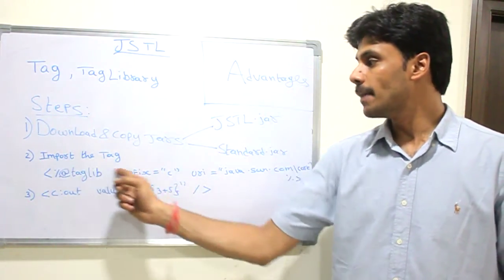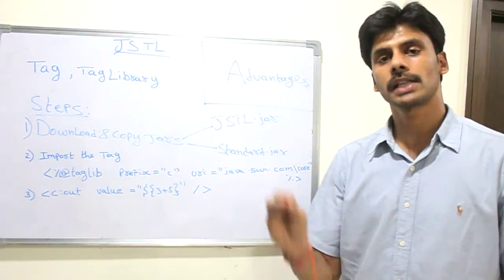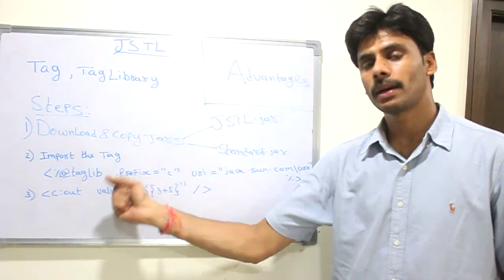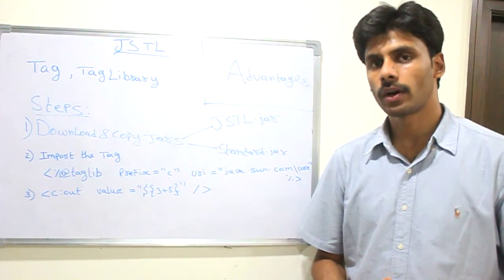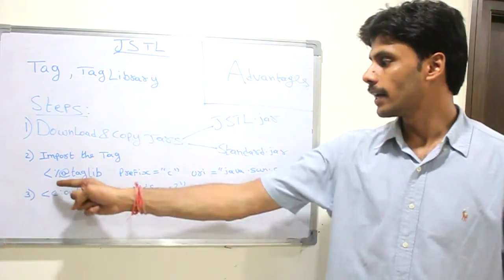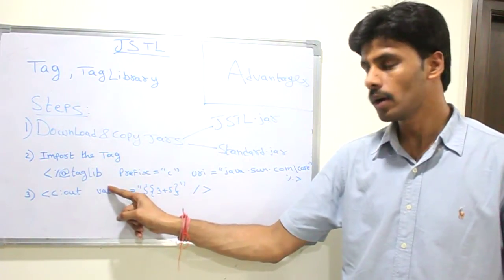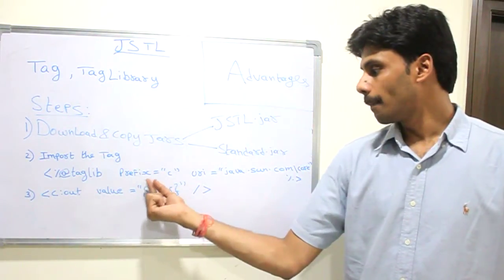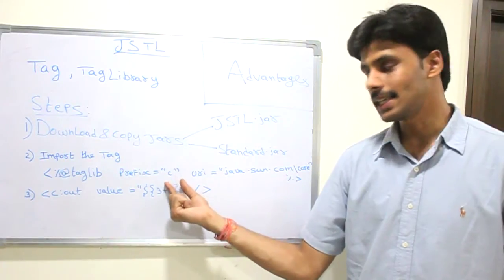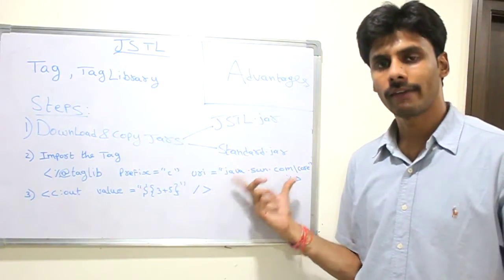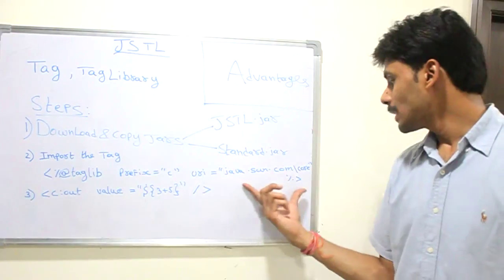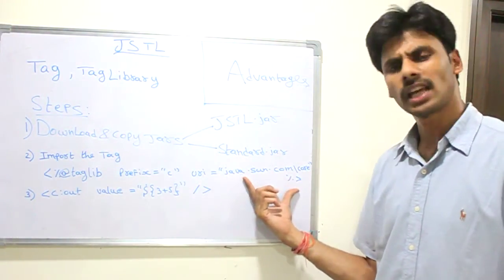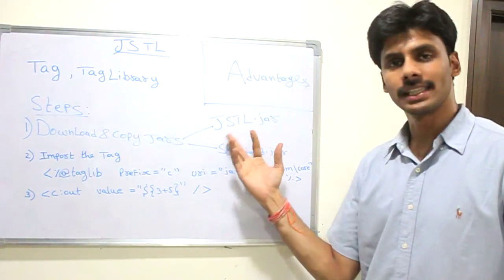The second step is to import the tag library. Once you drop the JARs, the tag libraries are there in those JARs. Now to use them in your JSP, here is where you use the taglib directive. You are aware of the page directive and the include directive already — here is the third directive called the taglib directive. You can use a prefix, which in this case is 'c', for the core tags available in the JSTL tag library. This is the URI which Sun Microsystems asks us to use, and it uniquely identifies the tags in these JARs.